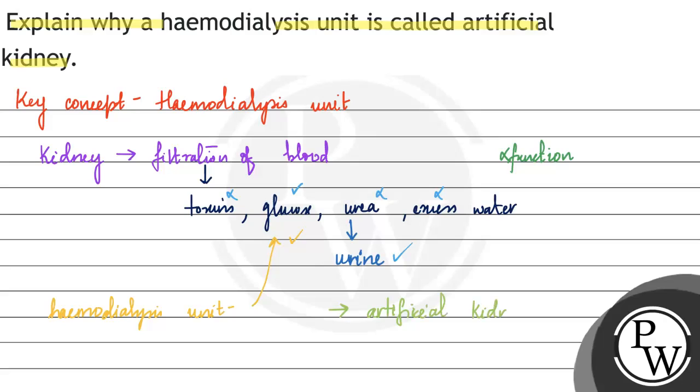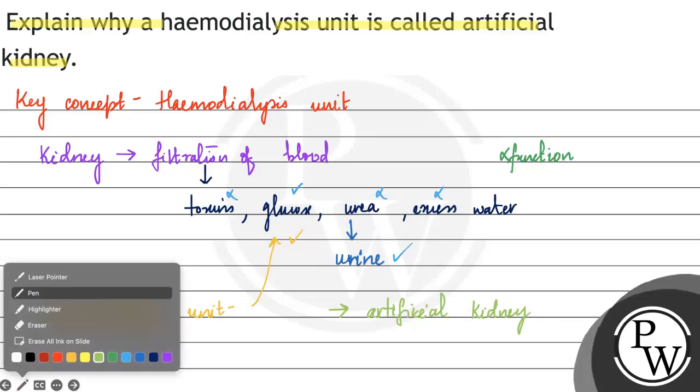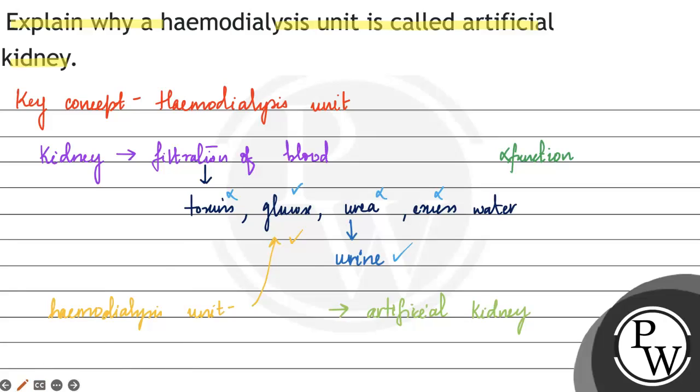We call the hemodialysis unit an artificial kidney because it functions like our kidney by filtering blood and producing urine. So we have seen why the hemodialysis unit is called an artificial kidney. Hope you understood it well. Best of luck.